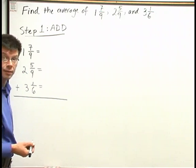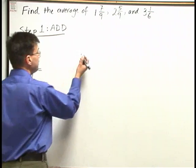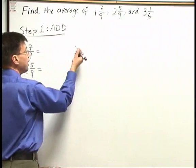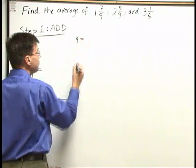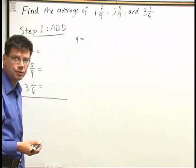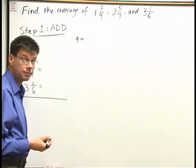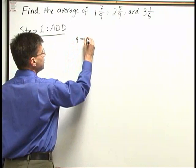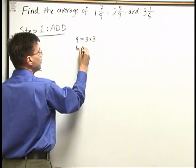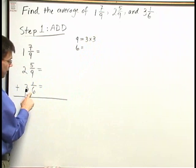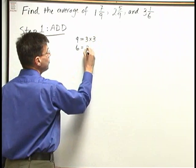To calculate the common denominator, we're going to find the LCM of nine and six. To find the LCM, I need to factor my denominators, nine and six, into primes. Nine factors as three times three, six factors as two times three.